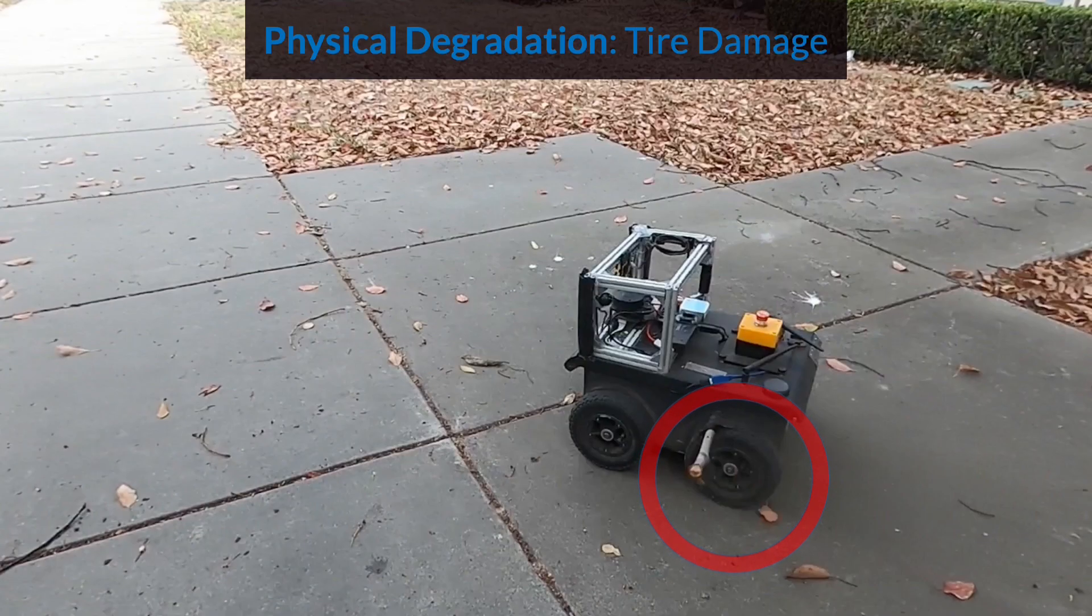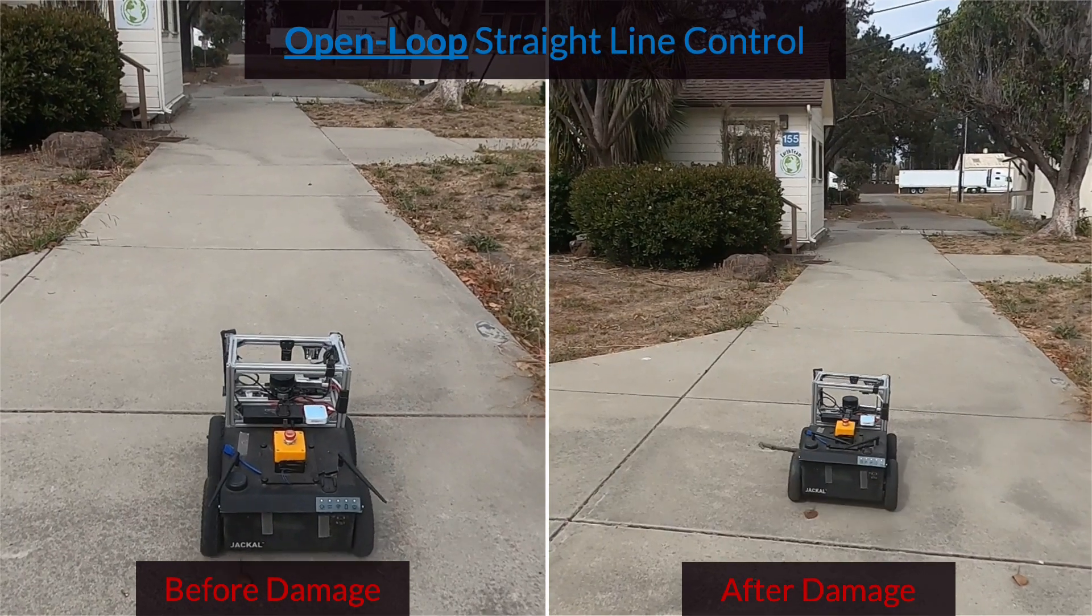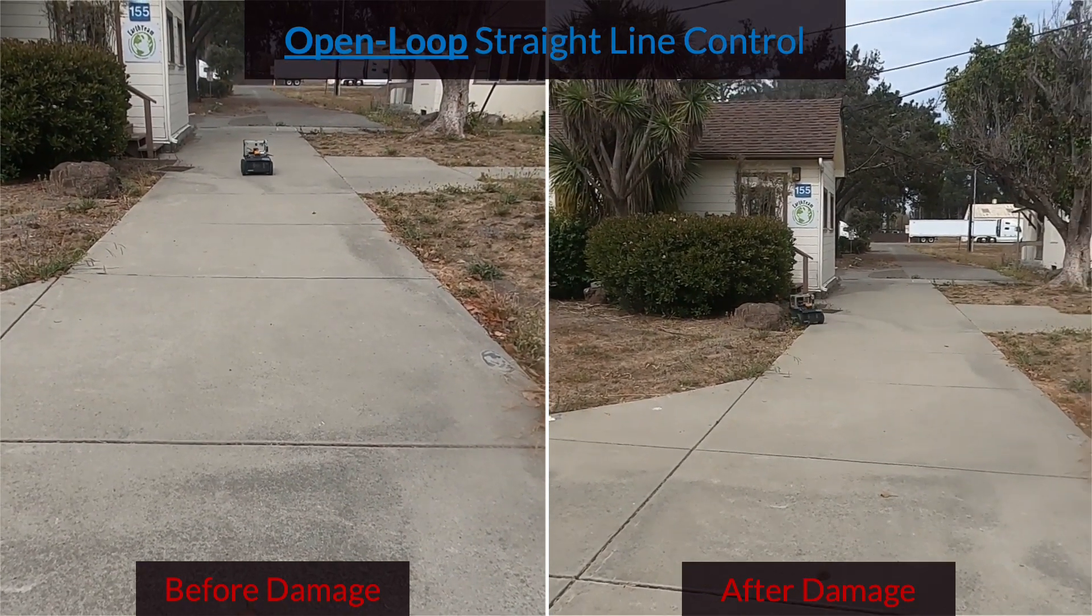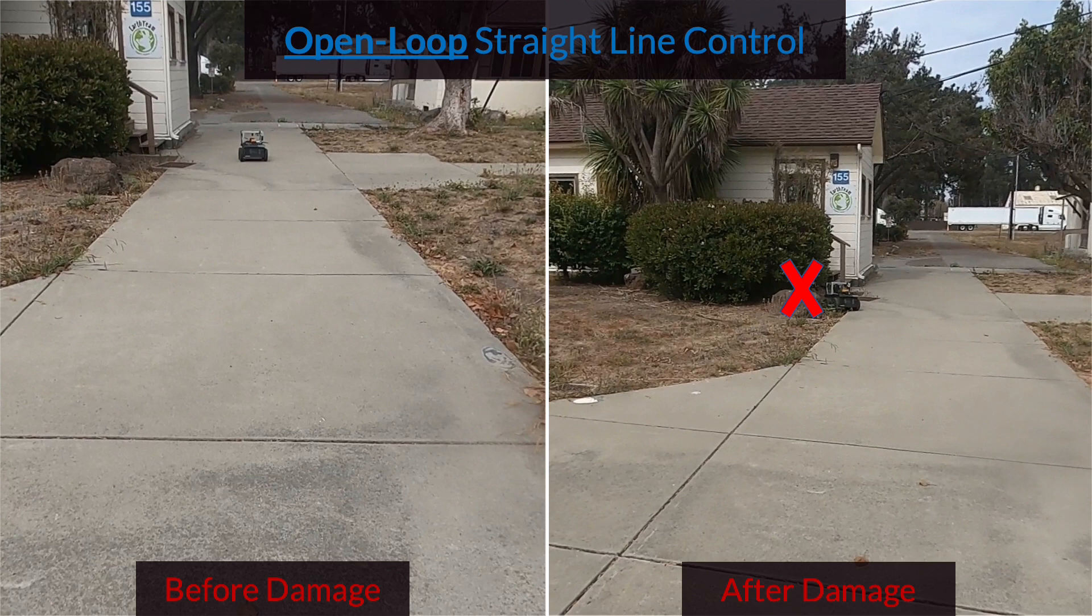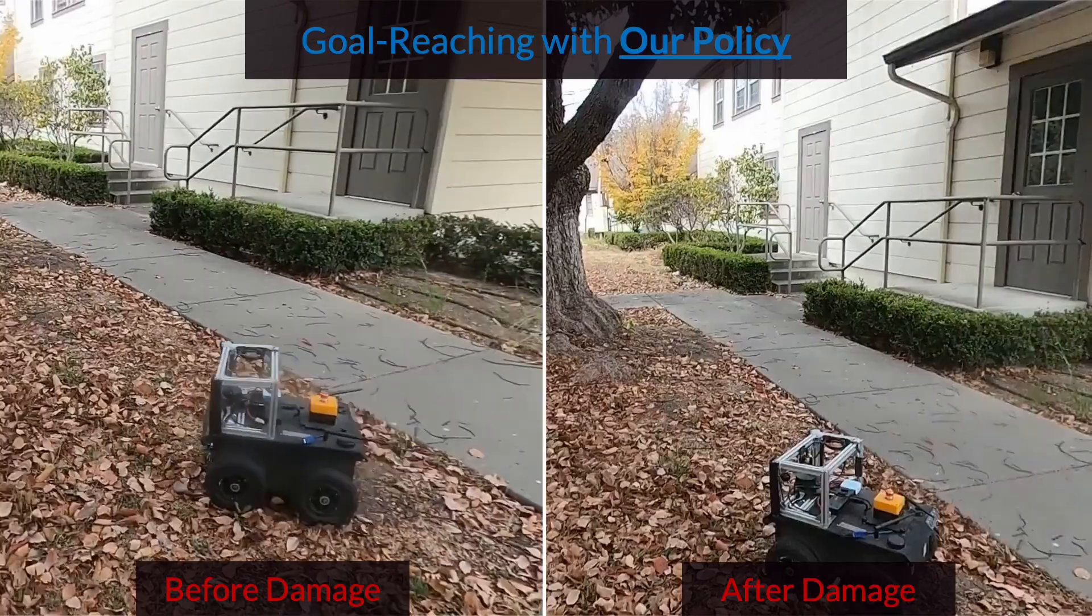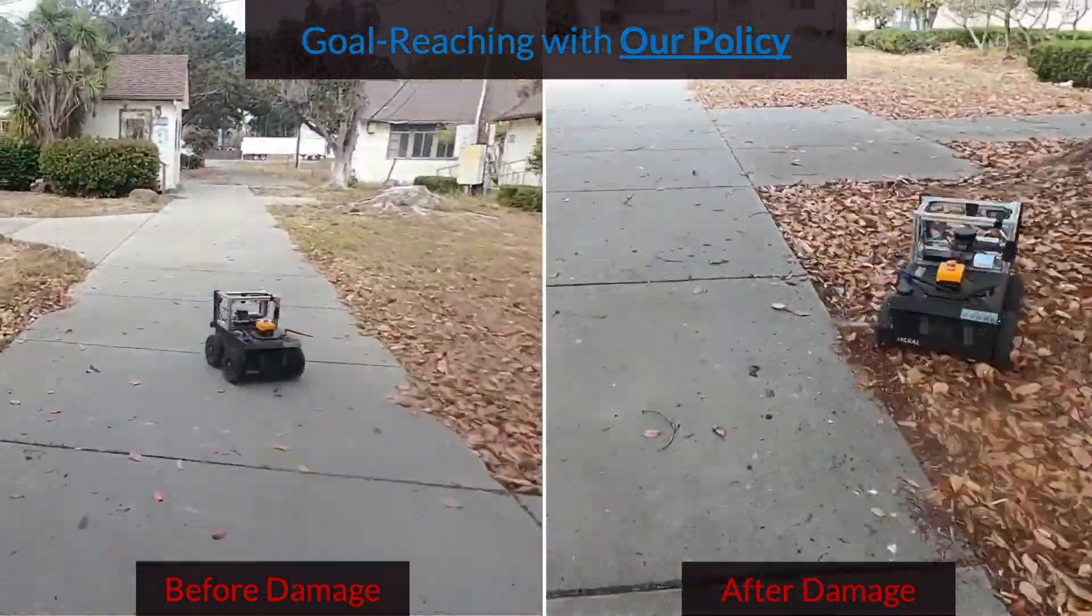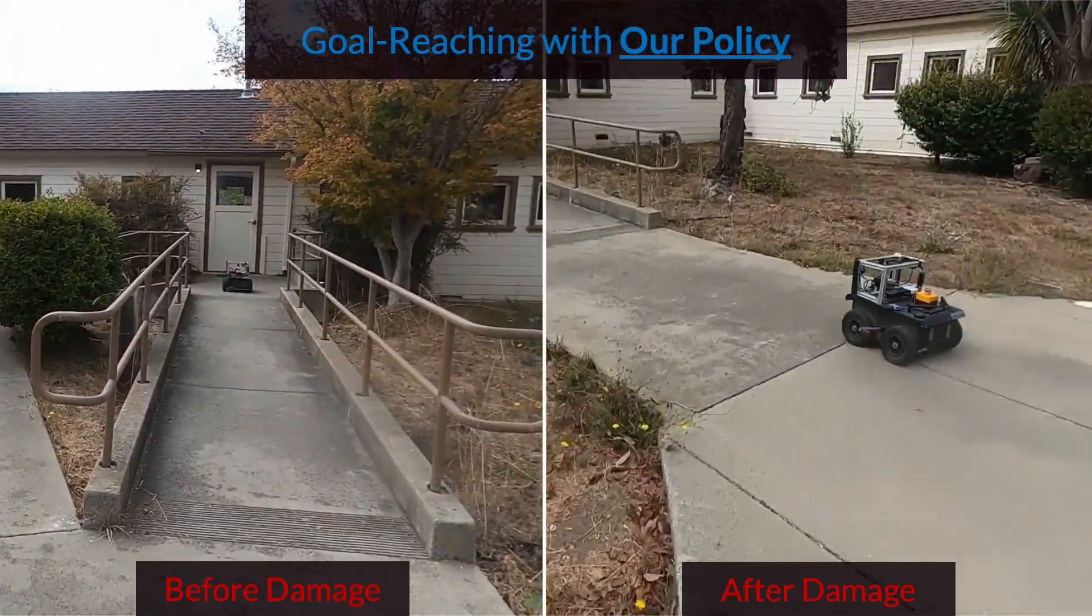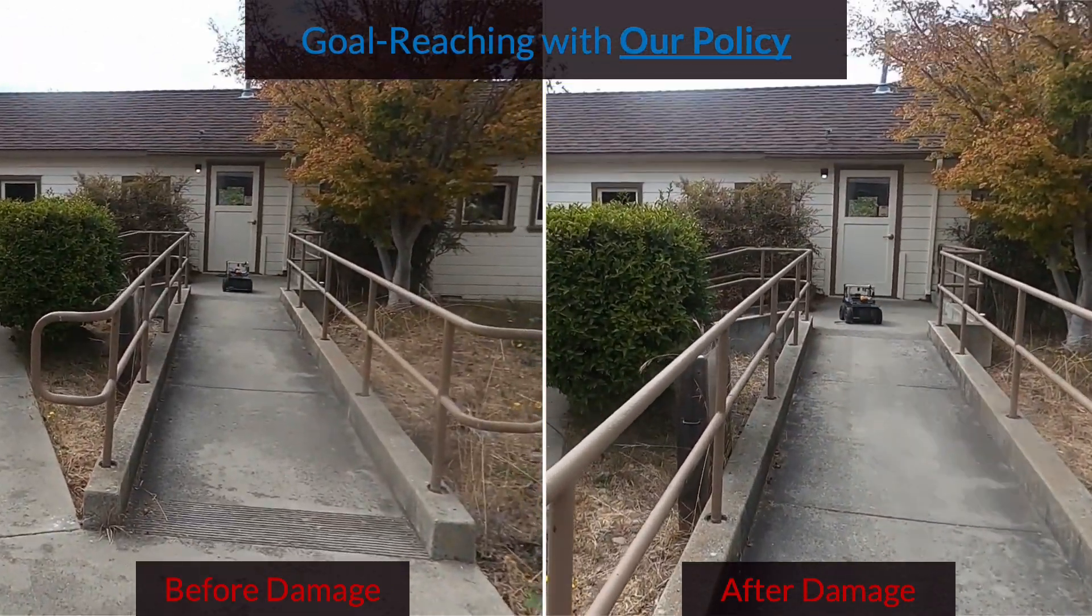We also test robustness to physical degradation, such as tire damage, shown here as a piece of wood lodged in the tire. This damage affects the dynamics of the robot, and actions corresponding to following a straight line using an open-loop controller lead to collision. We find that our learned omnipolicy is robust to such changes in the robot dynamics and can successfully reach the goal despite the damage.